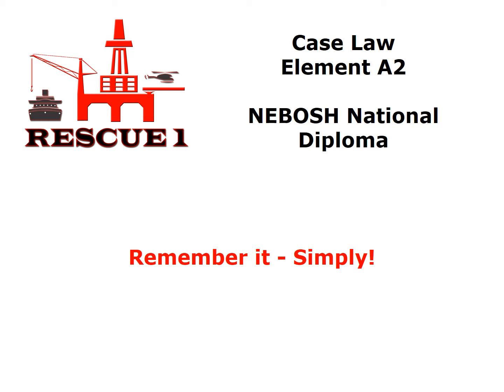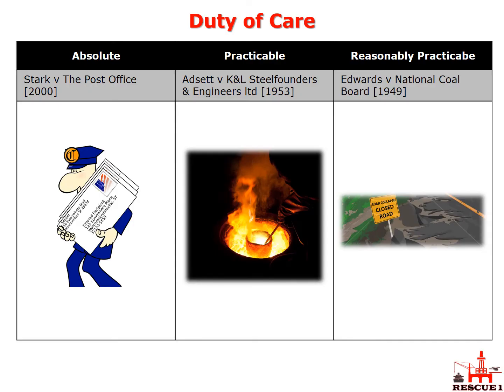Welcome to this video on case law element A2 of the NEBOSH National Diploma syllabus. In this video I'm just going to be covering the three cases required for element A2. We're not going to be covering the syllabus — it's just going to be a little bit of basic revision to help you remember and understand, because this is a subject that always comes up during the exams. You can use the slide as a memory jogger. You've got three levels of duty of care: absolute duty, practicable, and reasonably practicable.